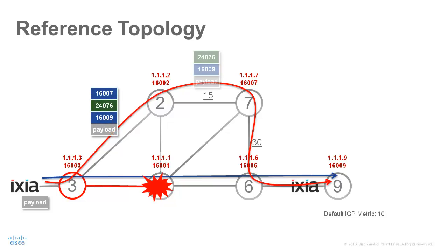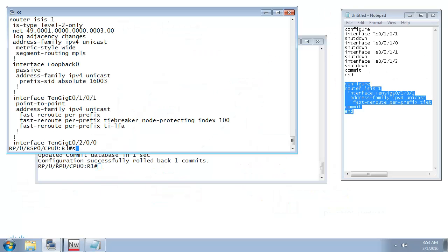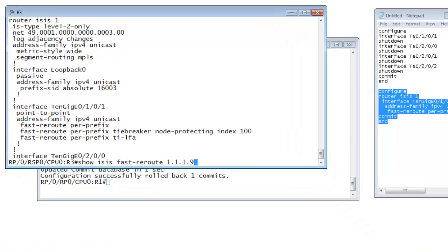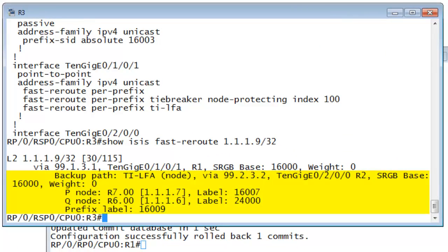A segment list is used to steer the traffic on the backup over this backup path. The packets on the backup path are first steered to node 7 using its prefix SID 16007. Then it is steered over the high-metric link to node 6 using the adjacency SID. And finally, it reaches the destination by using the prefix SID of node 9, 16009. When verifying the backup path for destination node 9 on node 3, we indeed see the backup path via node 7 and the link to node 6.